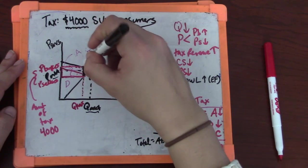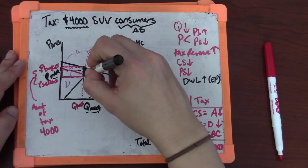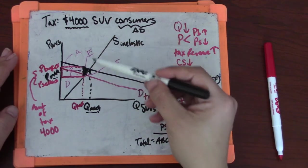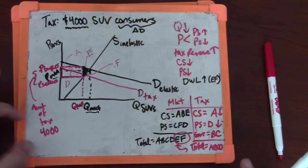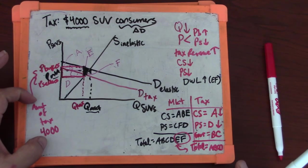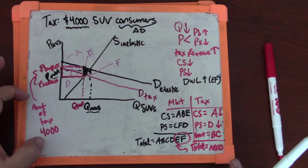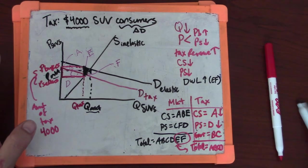E and F are all of the mutually beneficial transactions that are destroyed by this policy. The buyers that would love to pay $36,000 for an SUV and people who could make it for $33,000 now do not meet each other in the market to trade because they have to pay a $4,000 tax. After that tax, it's no longer worth it for them to make that transaction.